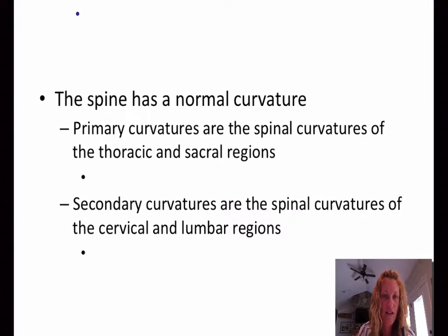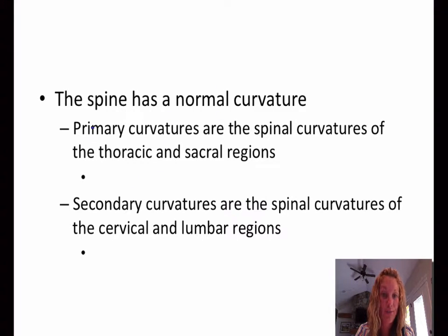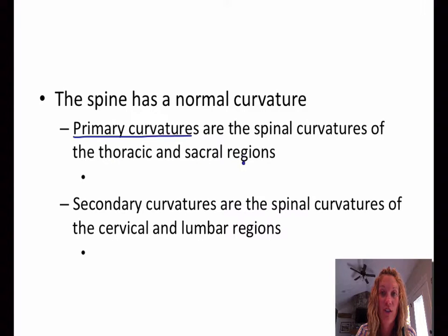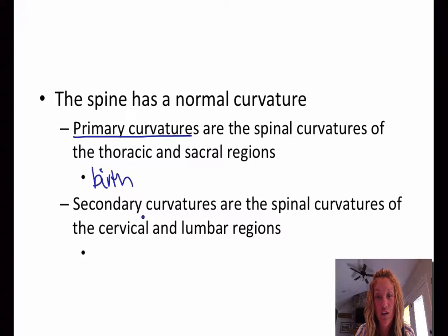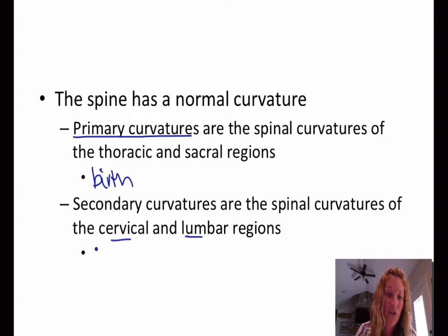We're going to take a little break from the actual bones and talk about some curvatures. The spine has normal curvature. You have one type called primary. Primary curvatures are the spinal curvatures of the thoracic and the sacral regions, and those are going to be present from birth. Then you have secondary curvatures — those are the curvatures of the cervical and the lumbar regions, and those develop after birth.